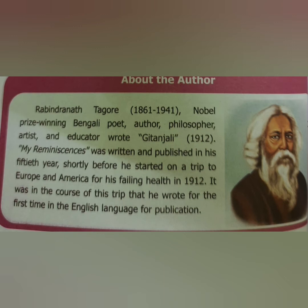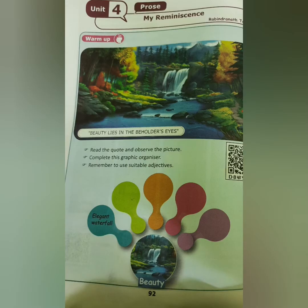Have you learned any poem or essay written by Rabindranath Tagore? Let us see the picture — what can you see? It is a natural scenery. We have already seen the poem 'A Thing of Beauty is a Joy Forever' by John Keats.